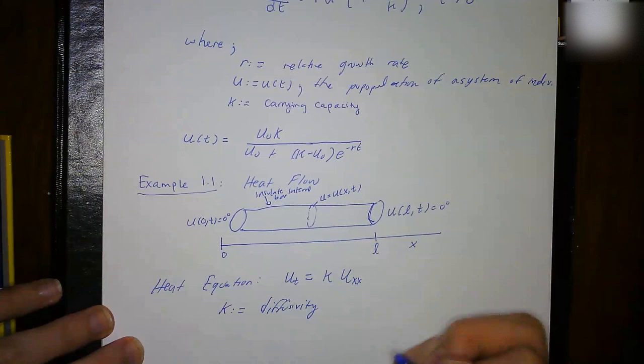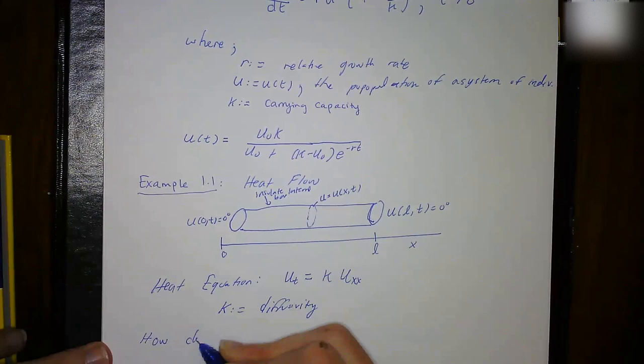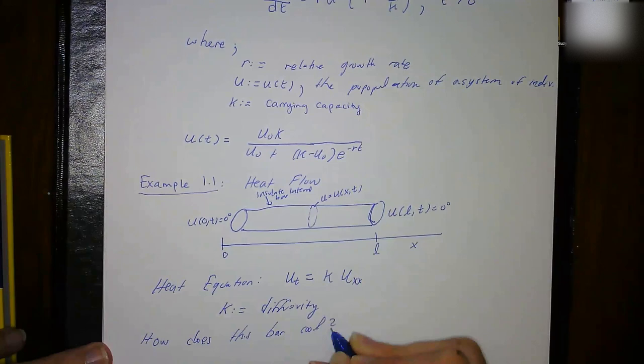In this case, we're going to say that k is a constant, but k can be a function of other variables as well. So we want to know: how does this bar cool? That's the question we want to answer.